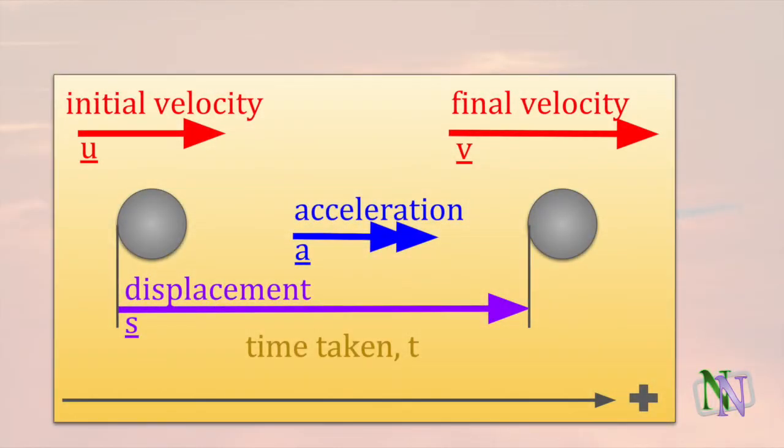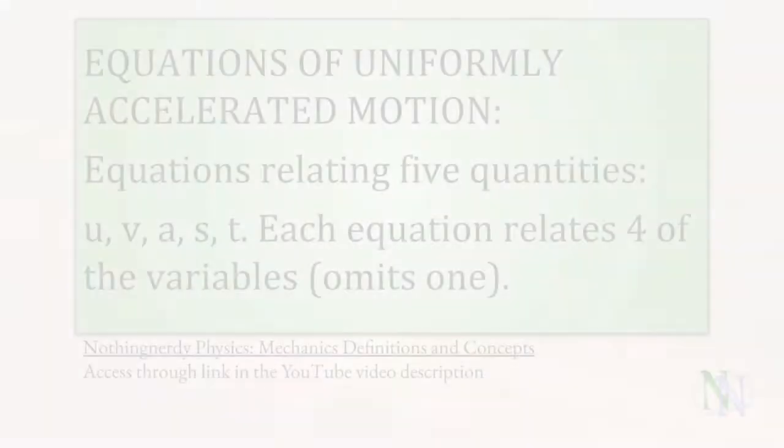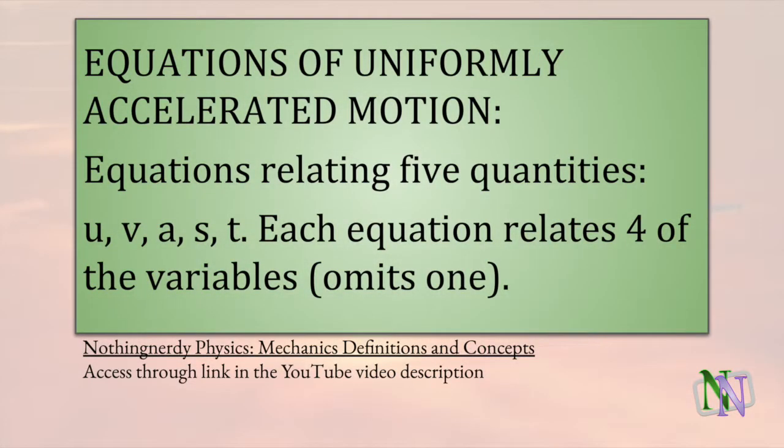The equations of motion are used for calculations about motion for which the velocity changes uniformly. This diagram shows a moving object with a constant acceleration, which is represented by the letter A. As well as the final and initial velocities V and U, the other variables in the equations are displacement S and time taken T. There are five possible equations of motion. Each one connects four of the quantities which describe uniformly accelerated motion.